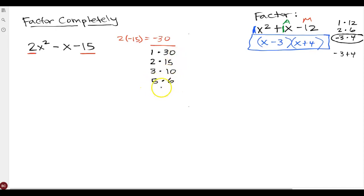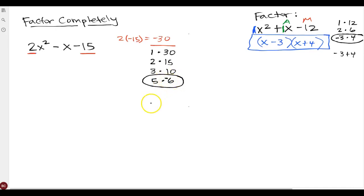Since 5 and 6 are right next to each other, I know I have all my factors. If I subtract these I get negative 1. I need to decide which is positive and which is negative: 5 plus negative 6 gives me negative 1, which is what I'm looking for, and 5 times negative 6 gives me negative 30. So the winning combination is 5 and negative 6.